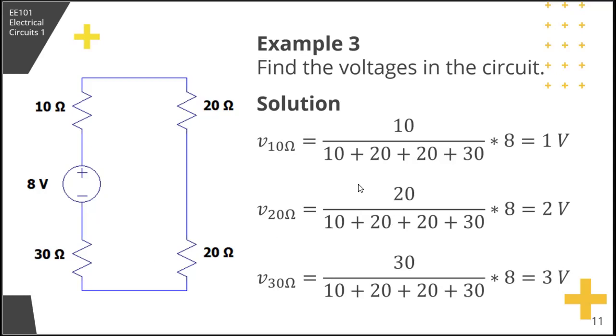So if you can solve for one, 1 volt, you can already deduce that it's 2 volts for 20 ohm and 30 ohm is 3 volts.